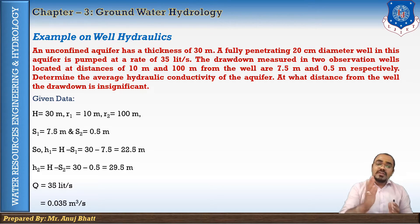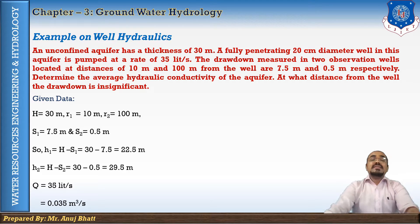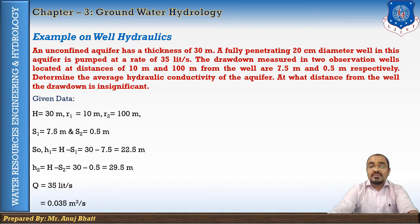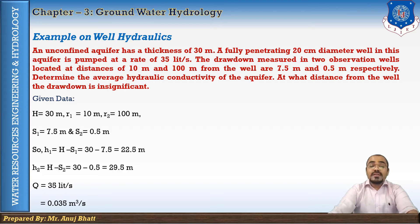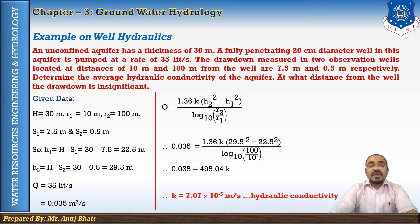Let's list the given data. Thickness of unconfined aquifer H = 30 m. Observation well distances: r1 = 10 m, r2 = 100 m. Drawdowns: s1 = 7.5 m, s2 = 0.5 m. Therefore h1 = H - s1 = 30 - 7.5 = 22.5 m, and h2 = H - s2 = 30 - 0.5 = 29.5 m. Discharge q = 35 liters/s = 0.035 m³/s.